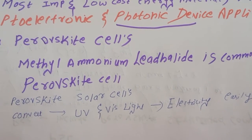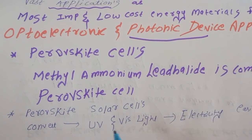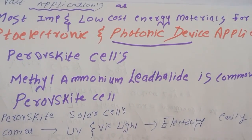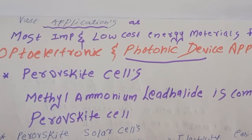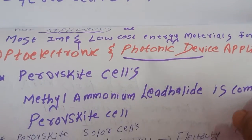So generally what these perovskite solar cells will do, they will convert UV and visible light directly into electricity. As their setup is also not very costly, nowadays they are widely used as a source of electricity.